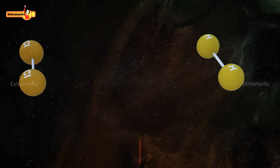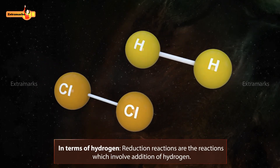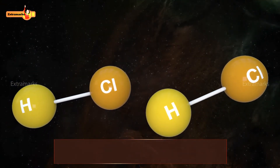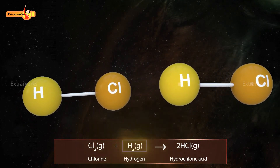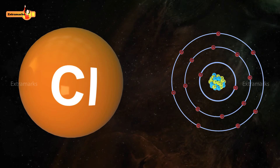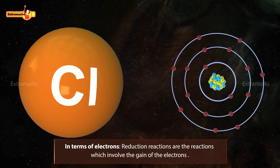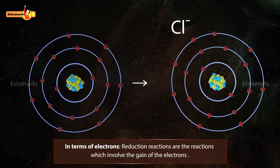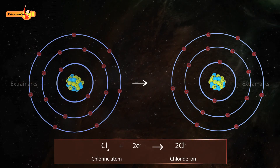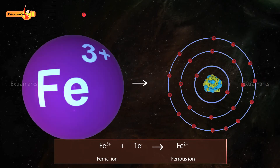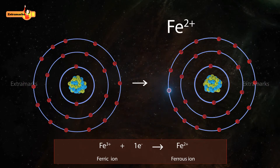In terms of hydrogen, reactions which involve addition of hydrogen are known as reduction reactions. In this reaction, hydrogen is added to chlorine. In terms of electrons, reduction reactions are defined as reactions involving the gain of electrons. In the given example, a chlorine atom gains an electron to form chloride ion. Ferric ion gains an electron to form ferrous ion.